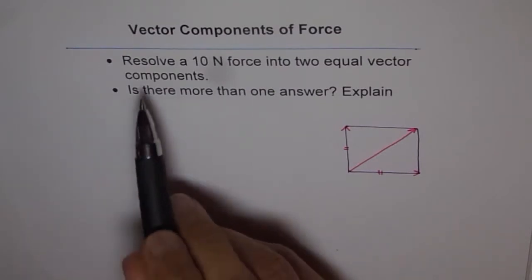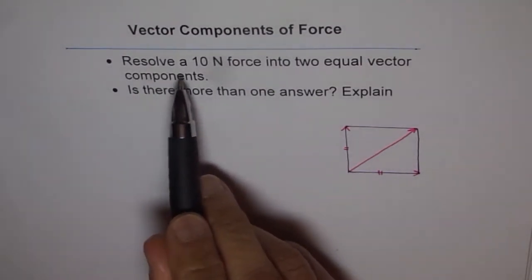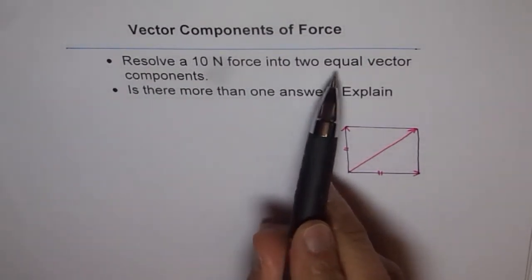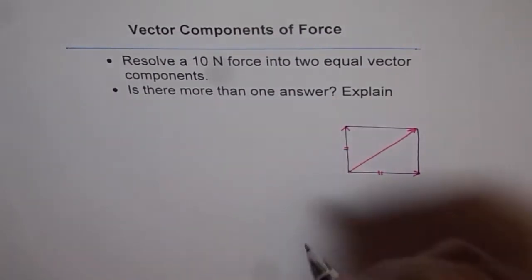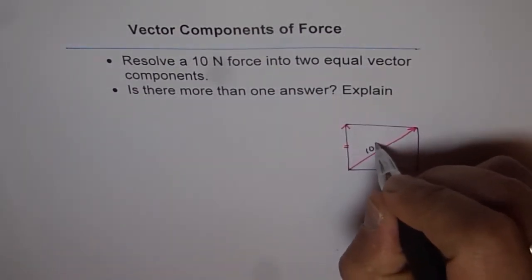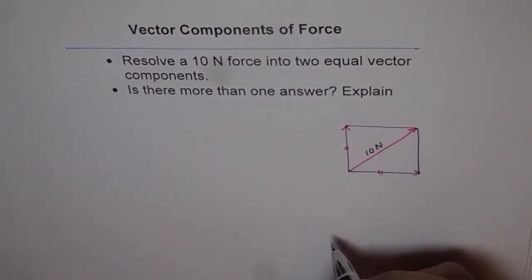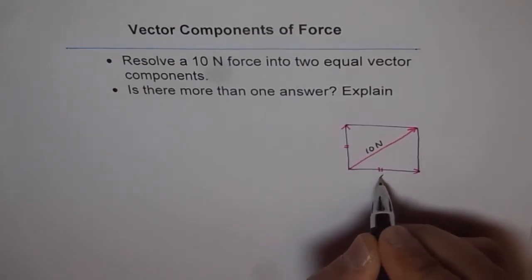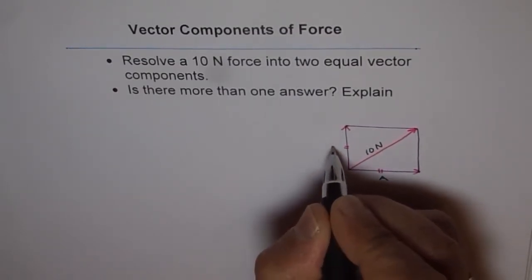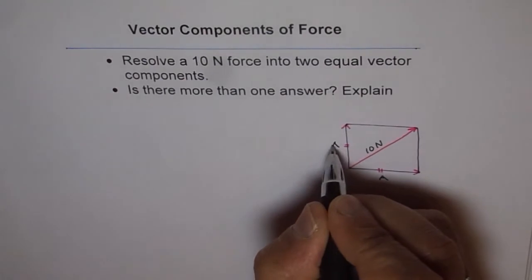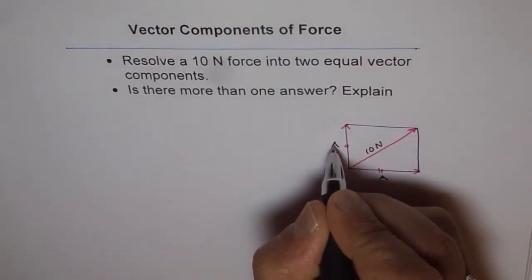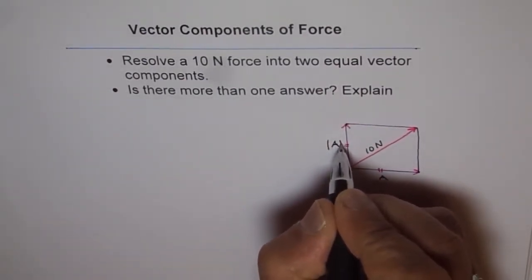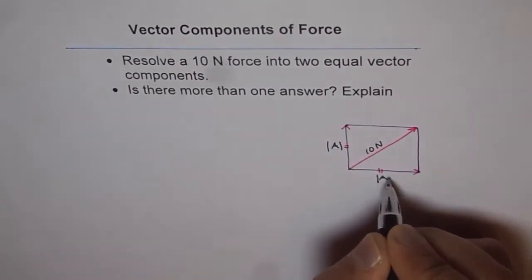The question is: resolve a 10N force into two equal vector components. So this is our 10N force and let the components be vector A and vector B. Since both are equal in magnitude, we are concerned with magnitude A — so magnitude of vector A equals magnitude of vector B.